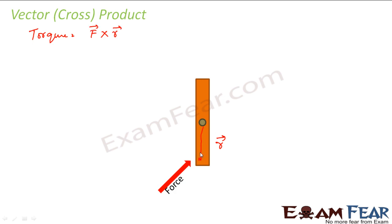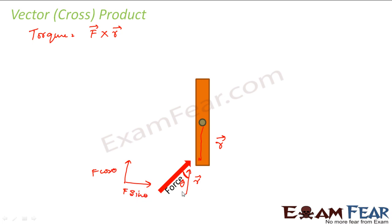This is my force and this is the R vector. This is the angle between force and R vector — let this angle be theta. If I now decompose this force, I will have two components: one in this direction and one in this direction. Since this angle is theta, this force will be F cos theta and this will be F sin theta.